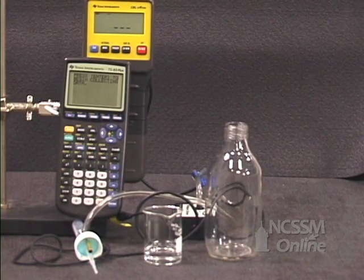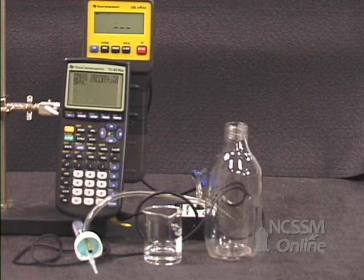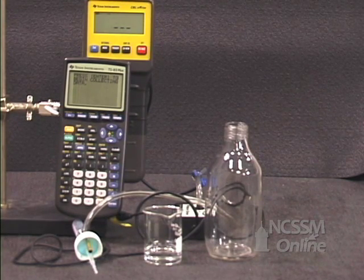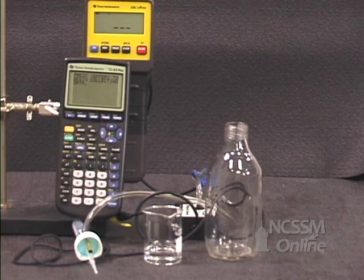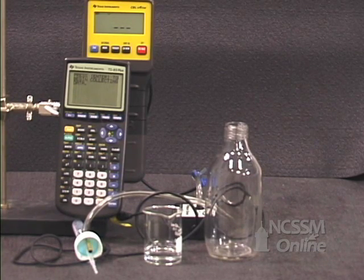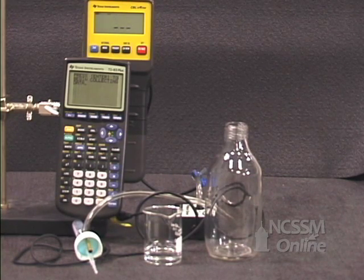We will do an experiment to measure the vapor pressure of methanol at different temperatures. We have connected a pressure sensor to our CBL and the CBL to the calculator. I've already loaded and started the ChemBio program and set it to measure the pressure every 3 seconds for 40 samples.